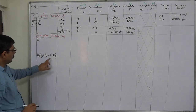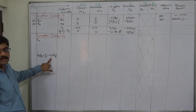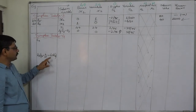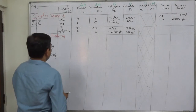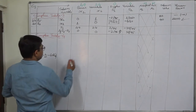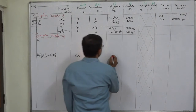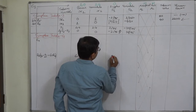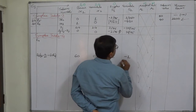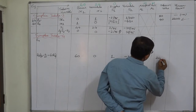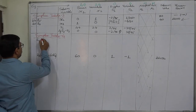Try to understand this one — many students make mistakes in this type of case. So 1 into 60 is 60; 0 into 60 is 0; 1/60 into 60 is 1; minus 1/60 into 60 is minus 1; and 40 into 60 is 2400. Now only we can prepare row 7.